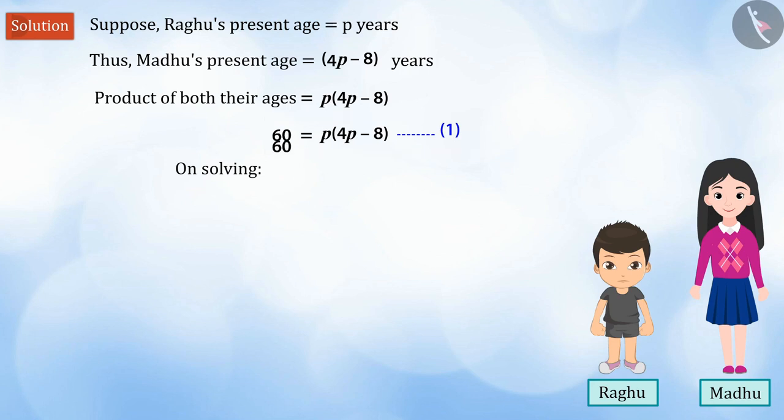Solving equation 1, we get equation 2, which is 60 = 4p² - 8p. Simplifying equation 2, we get equation 3.